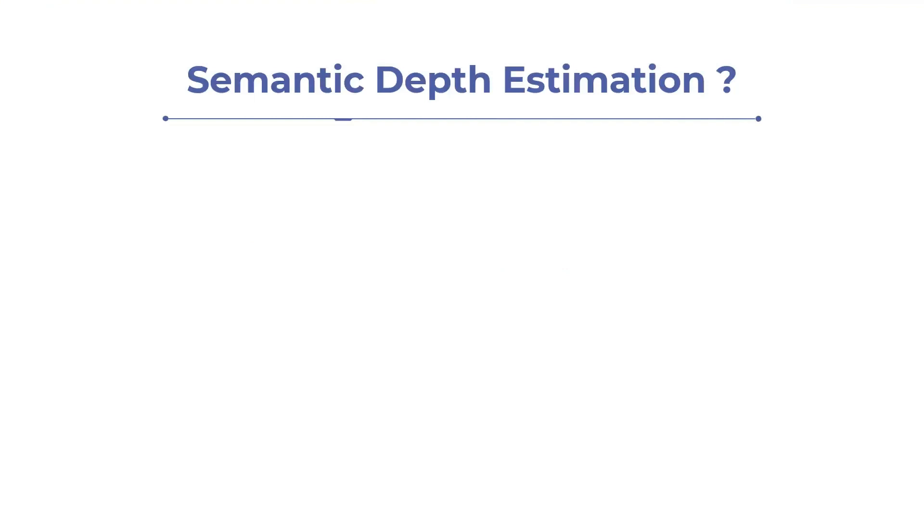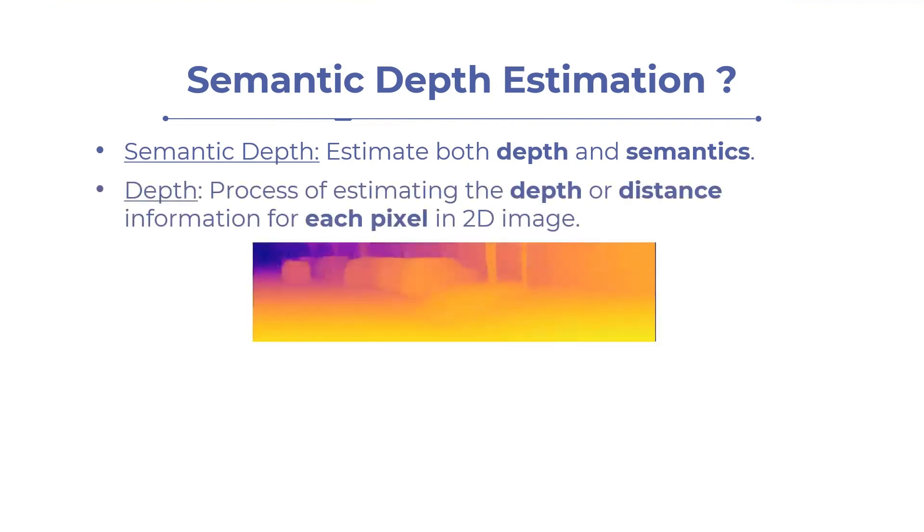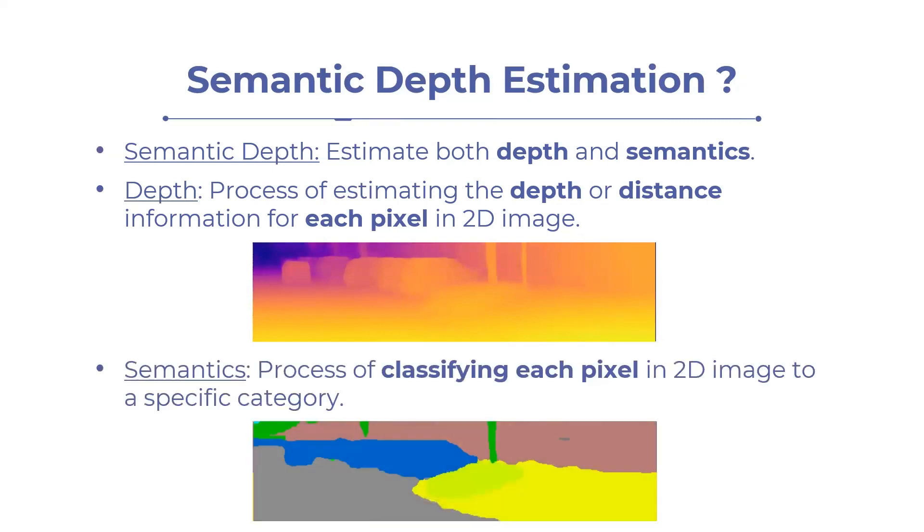Let's first understand what semantic depth estimation is. It refers to the process of estimating both depth and semantics from an image. Here, depth means estimating distance information for each pixel in a 2D image, and semantics involves classifying each pixel in a 2D image into a specific category.